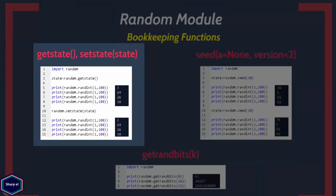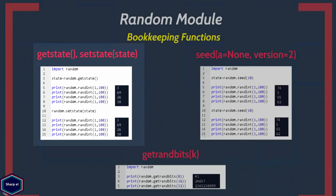In this example, I call getstate() which returns an object representing the internal state of the generator. Then I call the random() functions and they return pseudo-random numbers. Later I call setstate() to restore the state to the previous state. If you look at the output, you can see the deterministic behavior of the random number generator.